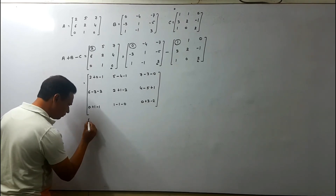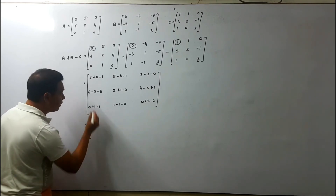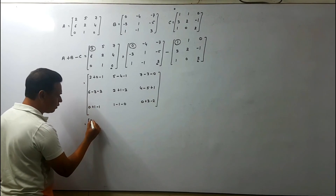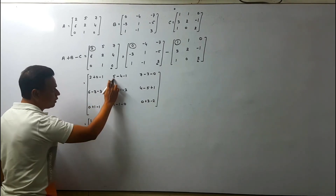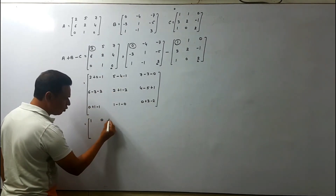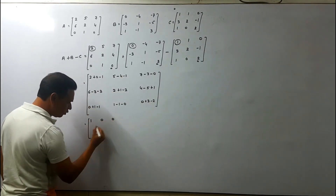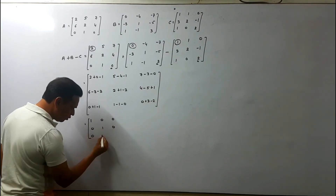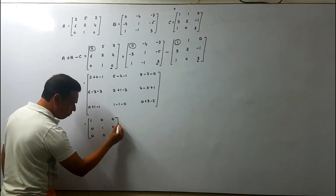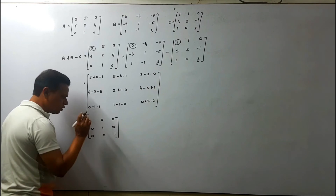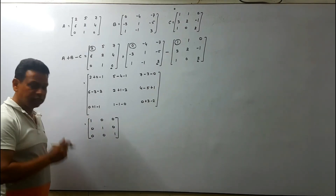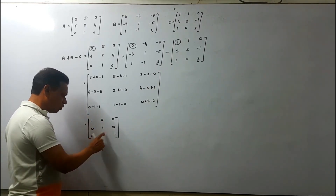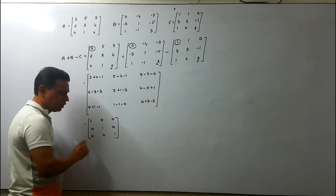Now see the solution. 2 plus 0 minus 1 equals 1. Then 5 minus 4 minus 1 equals 0. Then 0, 1, 0, 0, 0, 1. So the resulting matrix is: 1, 0, 0, 0, 1, 0, 0, 0, 1. My dear friends, this is your answer.